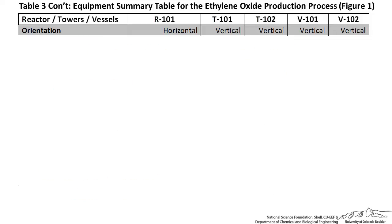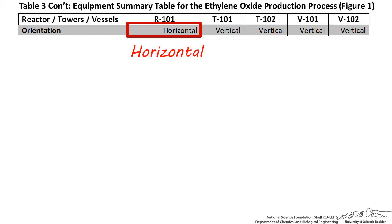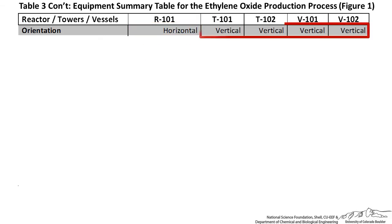For our ethylene oxide process, I chose a horizontal orientation for our reactor, since it's a packed bed with catalysts contained in a horizontal shell. For the distillation columns and flashes, I chose a vertical orientation, because columns and flashes need to be vertical to facilitate vapor-liquid separation.